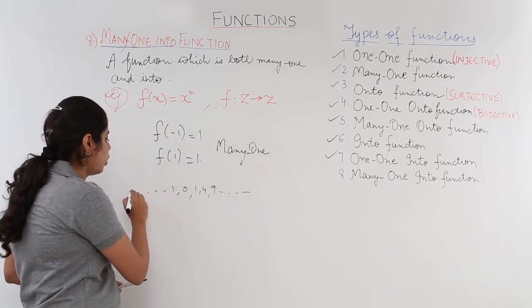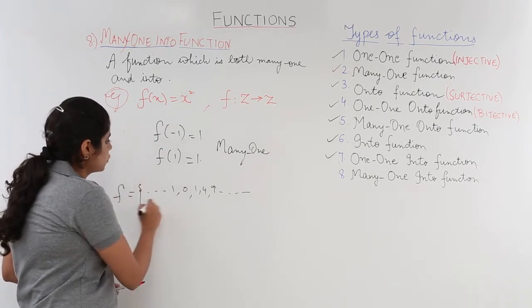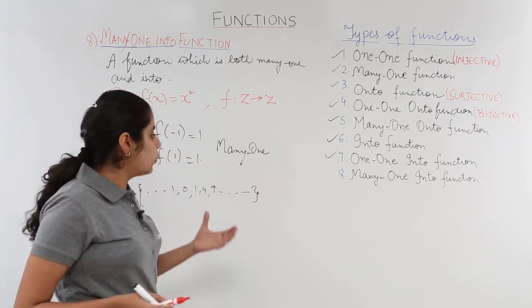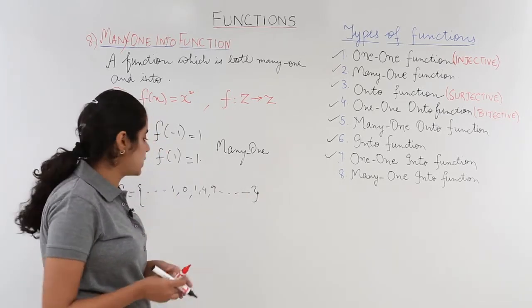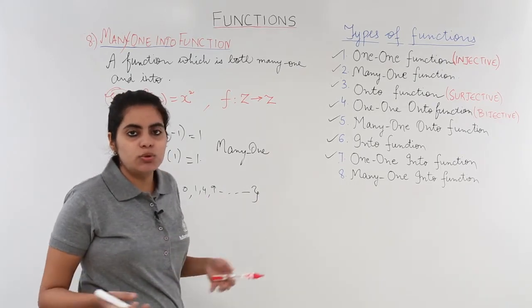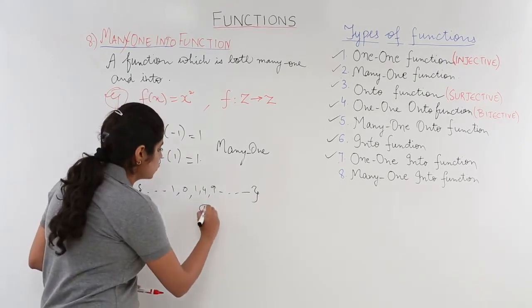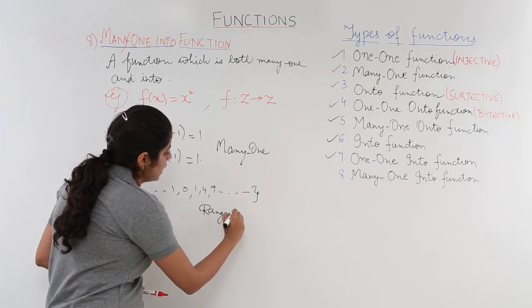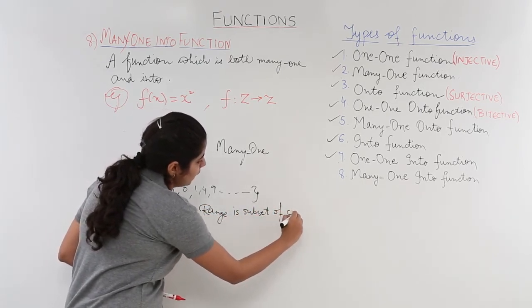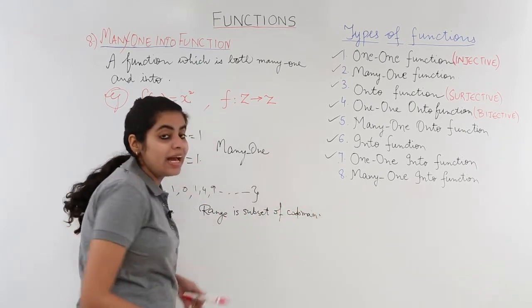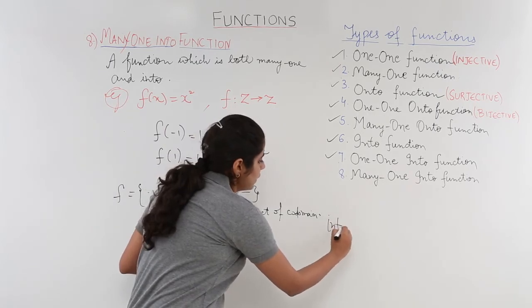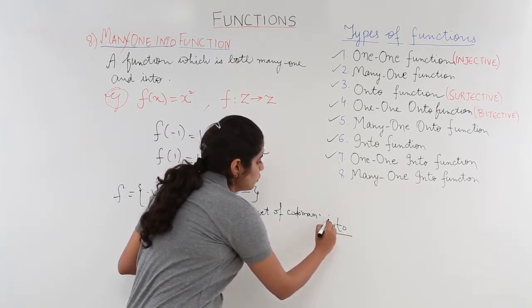It only has a few integers present in the range. Hence the range cannot be equal to the co-domain. So the range is a subset of co-domain. And hence this is not an onto function, rather into function.